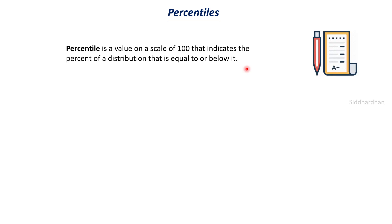Let's consider this example. Say there is a competitive exam and a student scores 40th percentile. That means about 40 percent of the people scored less marks than that student. If there are about 1 lakh students who appeared for that exam and one student scored 40th percentile, that means 40 percent of the people scored less than that student — about 39,999 students scored less than them. That is what is meant by a percentile: it gives how many values are below a particular data point.